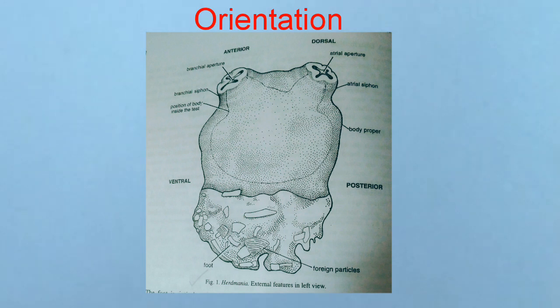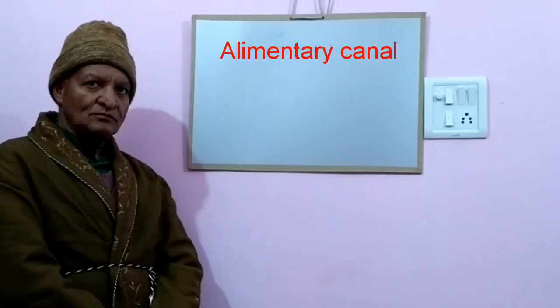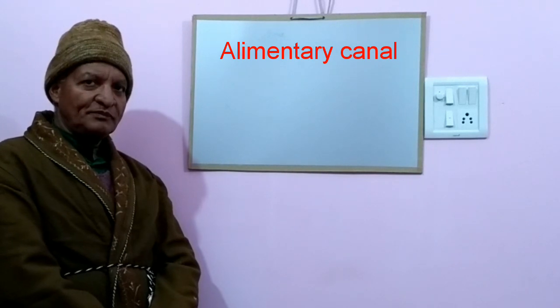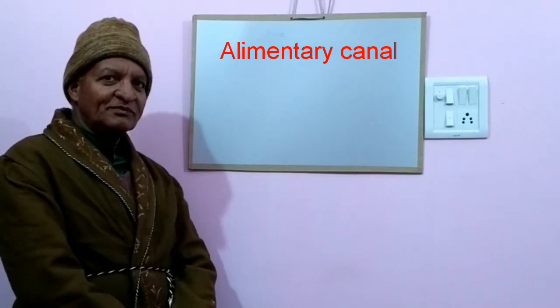The test or jacket around the body also acts as an accessory respiratory organ and receptor. Digestive system includes alimentary canal and digestive glands. Alimentary canal is quite long and complete.